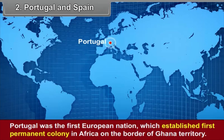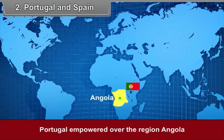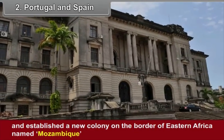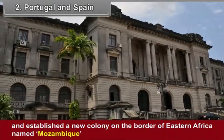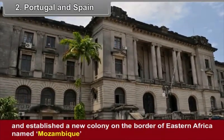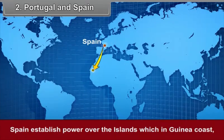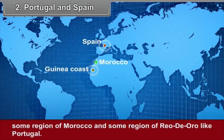Portugal and Spain: Portugal was the first European nation which established the first permanent colony in Africa on the border of Ghana territory. Portugal empowered over the region of Angola and established a new colony on the border of Eastern Africa named Mozambique. Spain established power over the islands on the Guinea coast, some region of Morocco and some region of Rio de Oro, like Portugal.